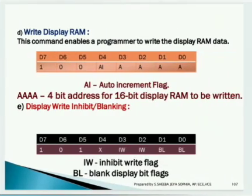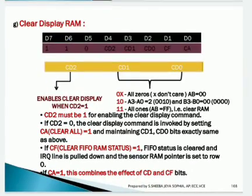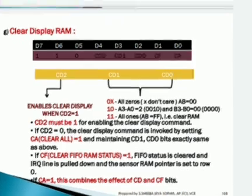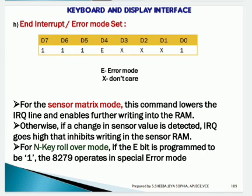The remaining command words are: third, read FIFO and sensor RAM to read data from the FIFO register; fourth, display to show the output; fifth, write display RAM to write to the display RAM; sixth, display write inhibit/blanking — activated when you need to blank the output or display zero; seventh, clear display RAM to clear all memory and restart from the initial step; and eighth, end interrupt/error mode set, which signals the end of an interrupt operation after it completes.